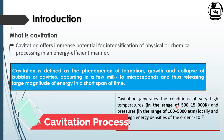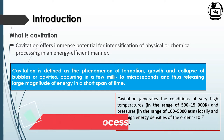Temperature in the range of 500 to 15,000 Kelvin and pressure in the range of 100 to 5,000 atmospheres are generated locally. Very high energy densities of the order of 10^18 kWh per cubic meter are also produced.